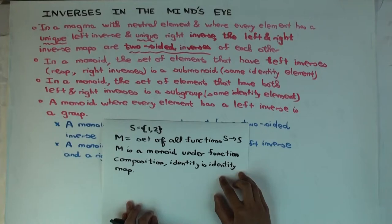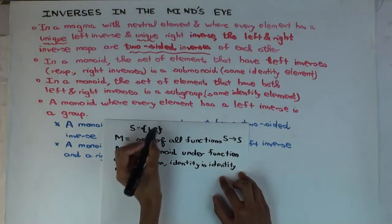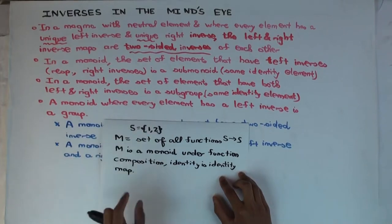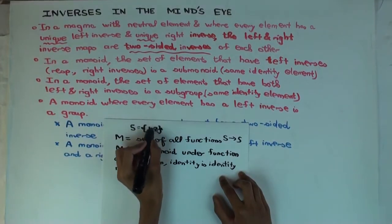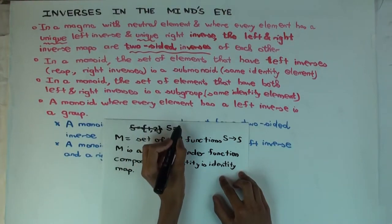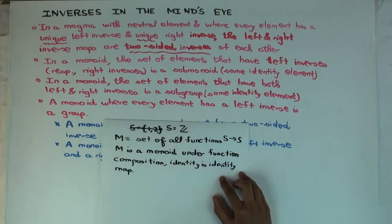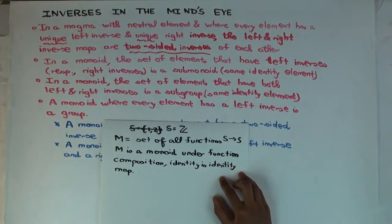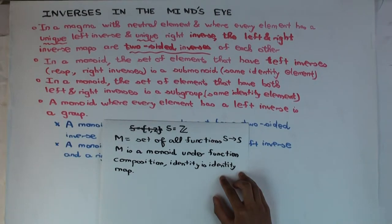Actually, you cannot get the example I want with S = {1, 2}. So take S as all the integers. You can still construct the set of all functions from S to S — now it's a lot bigger. You can still compose such functions, and under composition the identity map is still the identity. Now I want to consider some functions which when you compose one way you get the identity, but when you compose the other way you don't. Consider the function f(x) = 2x.